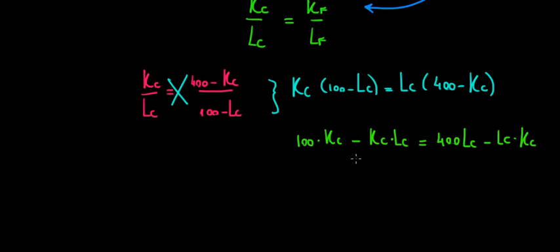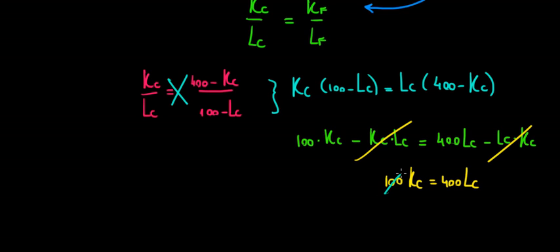We can see a common term — K_C·L_C — on both sides, which cancels out. We're left with 100·K_C = 400·L_C. Dividing both sides by 100, we get K_C = 4·L_C. We've found the relationship between capital and labor in clothing production.